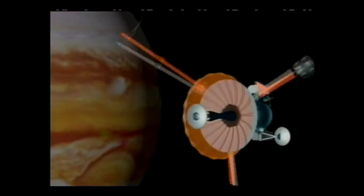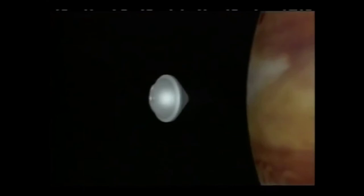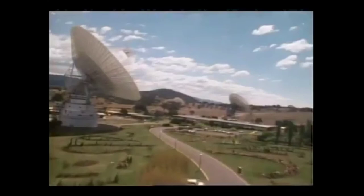Then the orbiter points its relay antenna toward the probe, which begins its descent into Jupiter's atmosphere. Once there, it will investigate the composition, temperatures and pressures at varying levels and send data back to the orbiter, which will retransmit it to Earth.